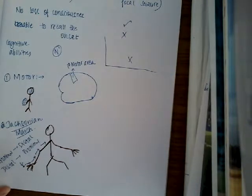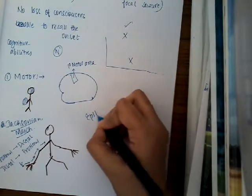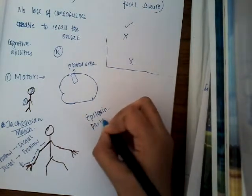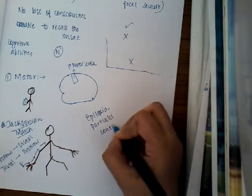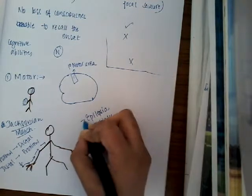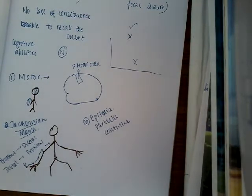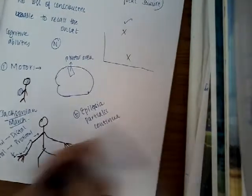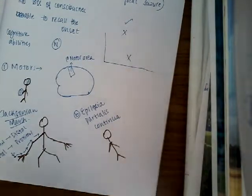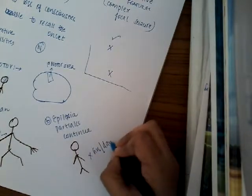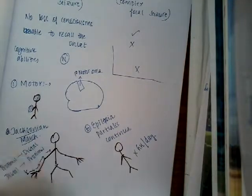The second type is Epilepsia Partialis Continua. Here the seizures may continue for hours together. This occurs only in a particular focal area — it can be some leg or hand or something — but this continues for hours or days. That is Epilepsia Partialis Continua.